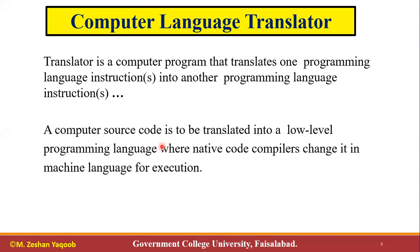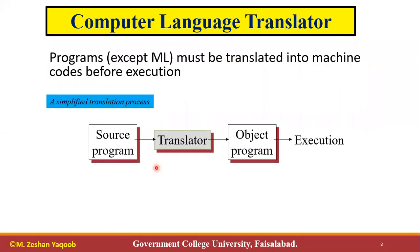A computer source code is to be translated into low-level programming languages, where the native code compiler changes it into machine language for execution. The computer can only understand machine language, and that is why language translators are very important in computers as well as programming. The programs must be translated into machine code before execution.